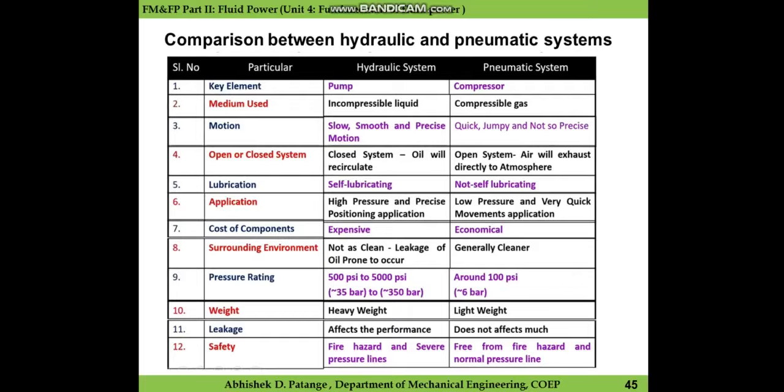The fourth parameter is open or closed system. A hydraulic system is considered a closed system because the oil taken out of the cylinder for either stroke extension or retraction is delivered to the tank and then the same oil is recirculated after filtering — it has confined boundaries. On the other hand, pneumatic systems are open systems because the air is exhausted directly to the atmosphere.